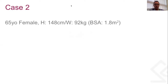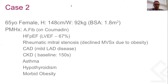Our second case is a 65-year-old female, 148 cm tall and 92 kg, with a complex history including chronic atrial fibrillation with normal LV function and diastolic dysfunction. She has a history of rheumatic mitral stenosis that was assessed a few years prior, but surgery was declined due to severe obesity. She also has a history of CKD and hypothyroidism.